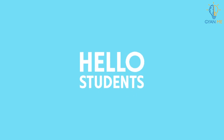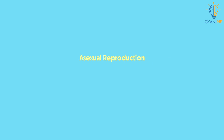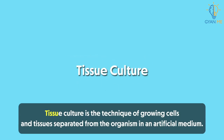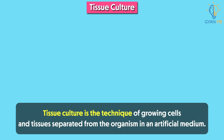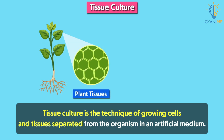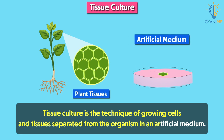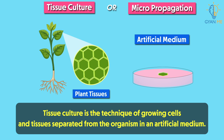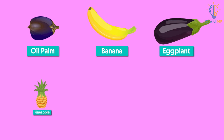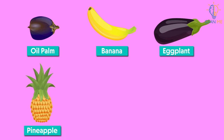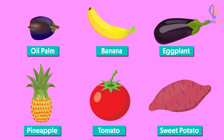Hello students, today we will learn about one last method of asexual reproduction: tissue culture. Tissue culture is the technique of growing cells and tissues separate from the organism in an artificial medium. This technique is also known as micropropagation. Oil palm, banana, eggplant, pineapple, rubber tree, tomato and sweet potato have been propagated by tissue culture in developing countries.